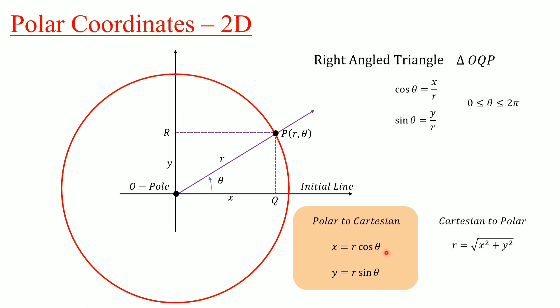From this, taking the square of both equations x = R cos theta and y = R sin theta and summing them, we get R² = x² + y², so R equals the square root of x² + y².